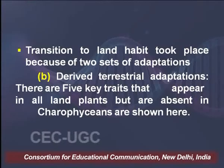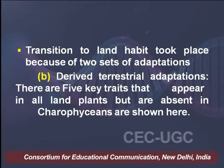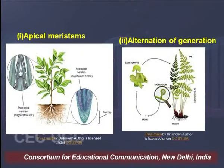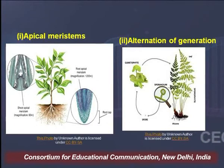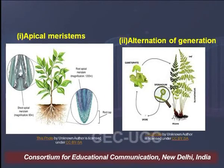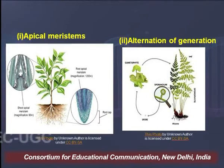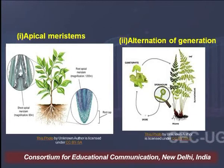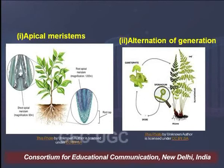The other set of adaptations we call derived terrestrial adaptations — there are five different adaptations which are most important. The first and foremost was the evolution of apical meristems. Apical meristems are the group of meristematic cells found at the tip of shoot or root. These meristematic cells are responsible for the formation of different types of body organization, and the origin of apical meristems allowed a compact body structure in plants.